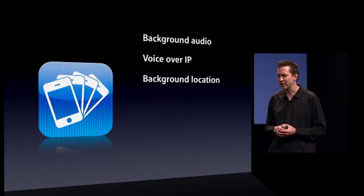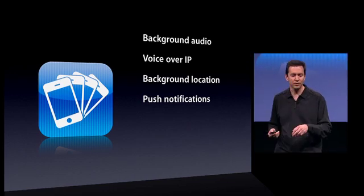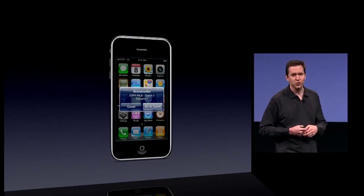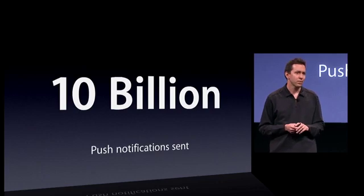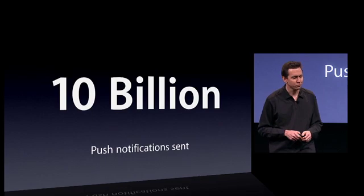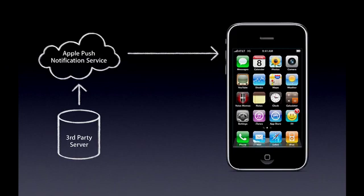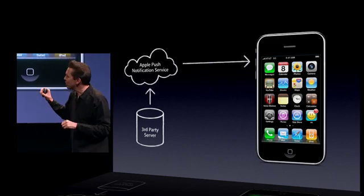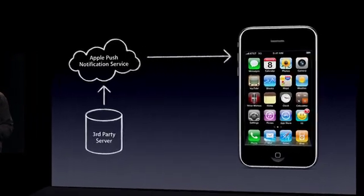And that is background location. Next, push notifications. We've had these for about nine months now. They're incredibly popular — great for things like scoring updates, news alerts, people challenging you to a game. In fact, in just nine months, we've pushed more than 10 billion notifications. Here's how it works: a third party sets up a server, they send their notification to Apple's push notification server, and then we send it to the phone. We can do this with very low power because we're always connected — we have a single connection to the phone — and we coalesce multiple notifications from multiple sources through this one connection to the phone.